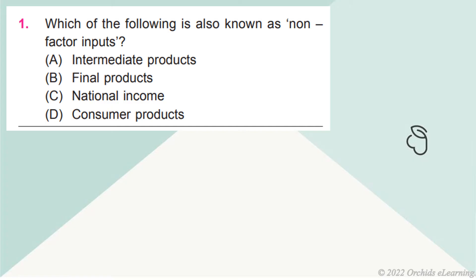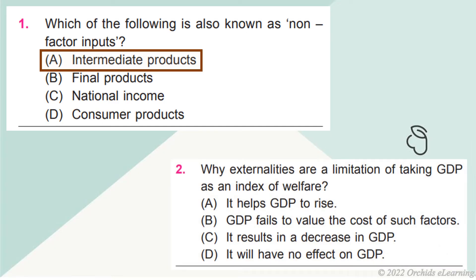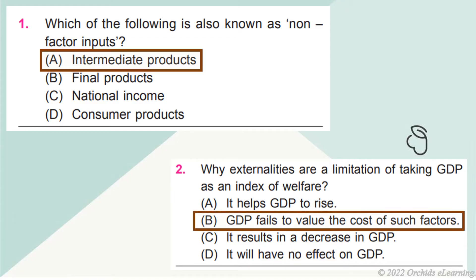Question 1: Which of the following is also known as non-factor inputs? Answer: a. Intermediate products. Externalities are a limitation of taking GDP as an index of welfare. Answer b: GDP fails to value the cost of such factors.